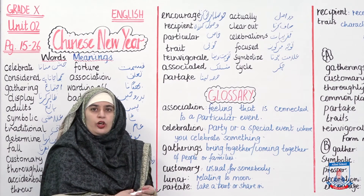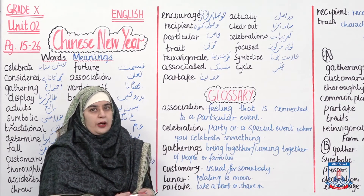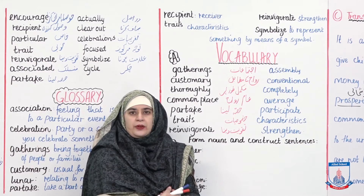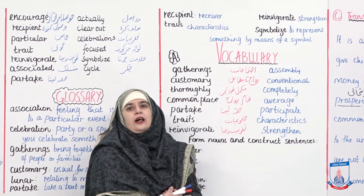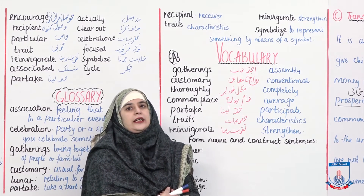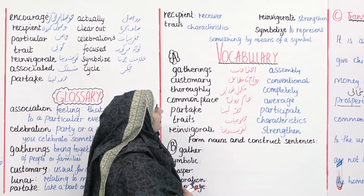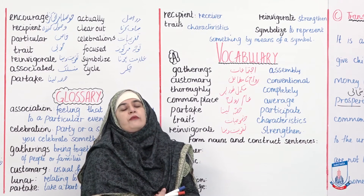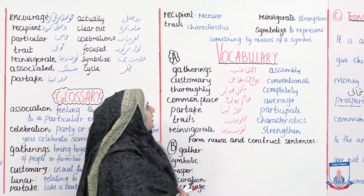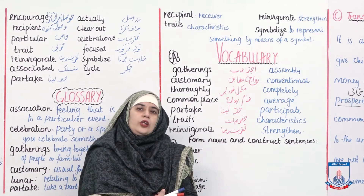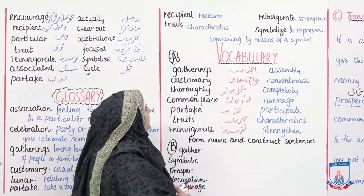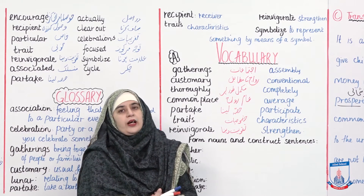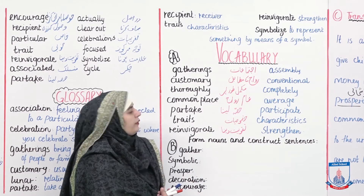So far for those words. Let's move on to the rest of the glossary words. Recipient: a receiver. The recipient of the kidney was in a very critical condition until his body accepted the donation. Reinvigorate: we must reinvigorate the feeling of patriotism in order to make our country prosper. Traits: he has all the traits of a successful lawyer. Symbolize: the white color in Pakistan's flag symbolizes the presence of the minority in Pakistan.